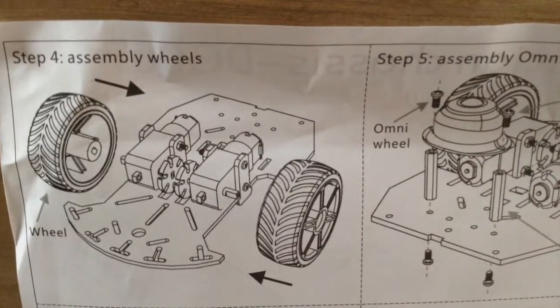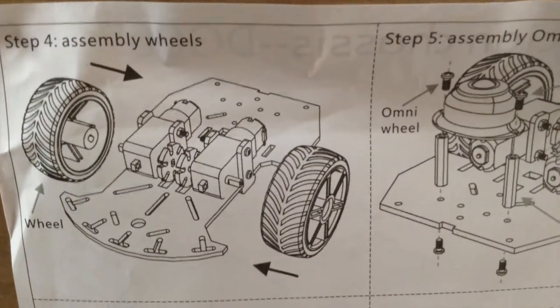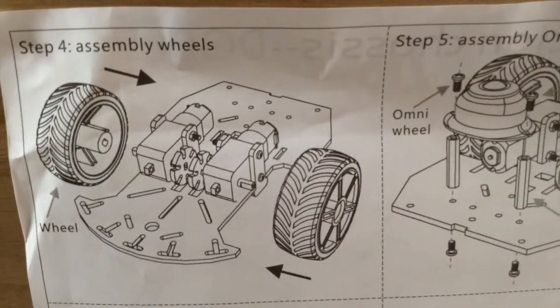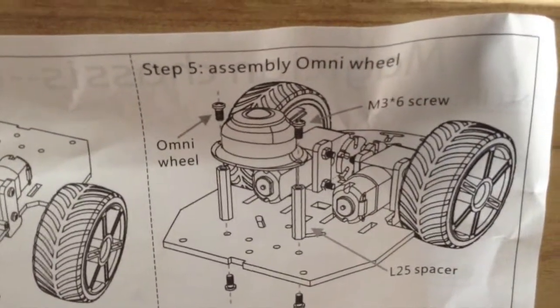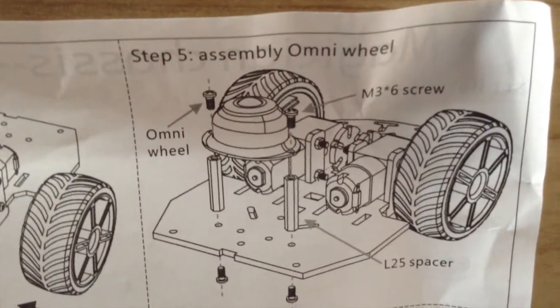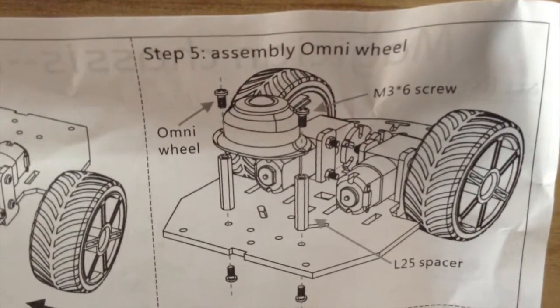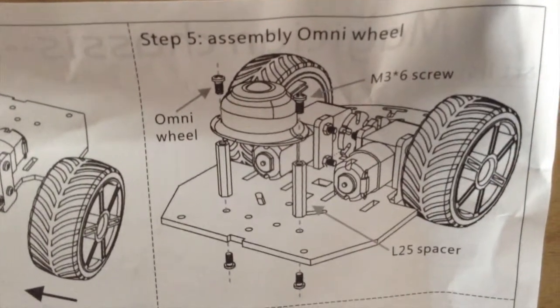Now step four is to assemble the wheels. So that's fairly easy. You just have to line up the slot of the wheels and push them on the motors. And we'll also complete step five to assemble the omni wheel. We have to put on some spacers and screws to hold that on. So now I'll do that and let you see the result.